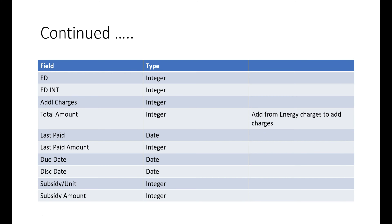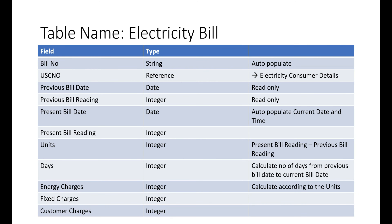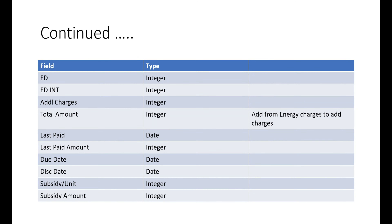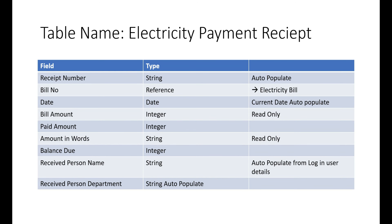Last paid date and last paid amount are also auto-populated from another table. Due date is calculated — for example, 10 days after bill generation. Disconnection date also has a backend logic. Subsidy amount: if a consumer has paid extra previously, or if the government is giving a subsidy, the subsidy with interest is stored as an integer and the subsidy amount is calculated accordingly.